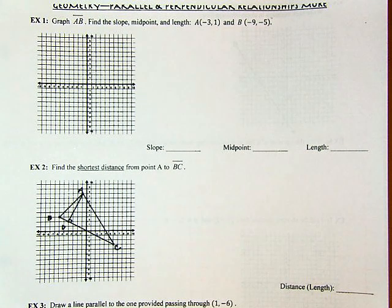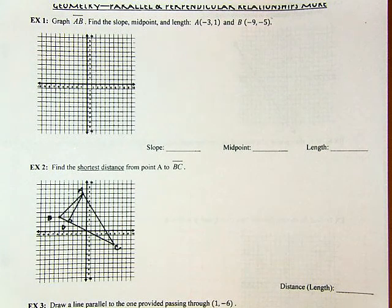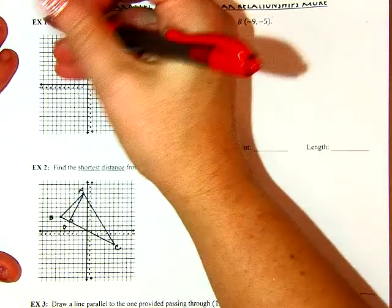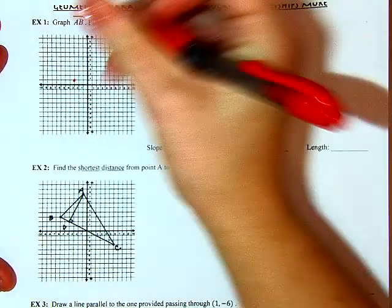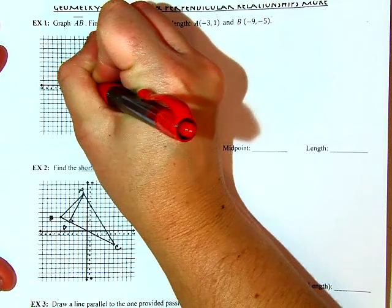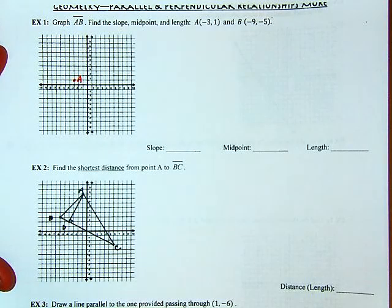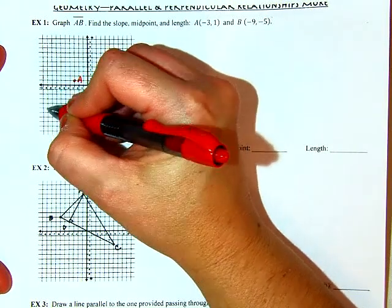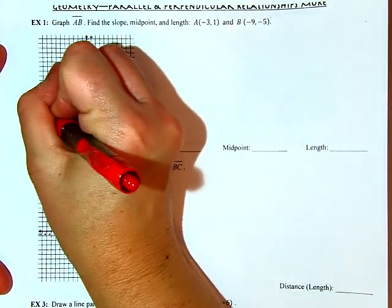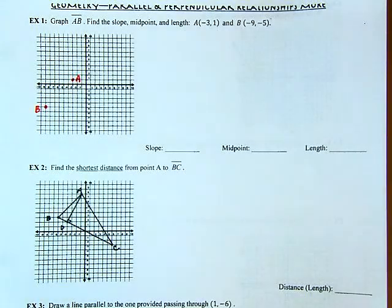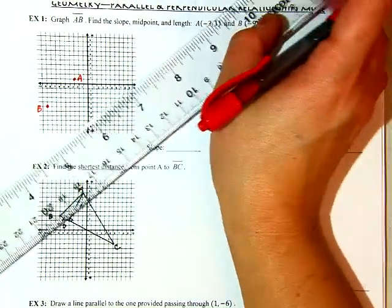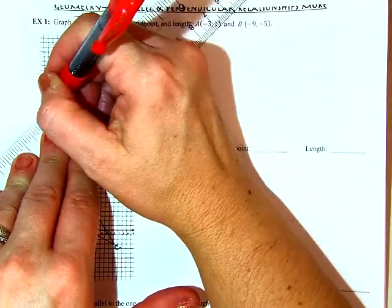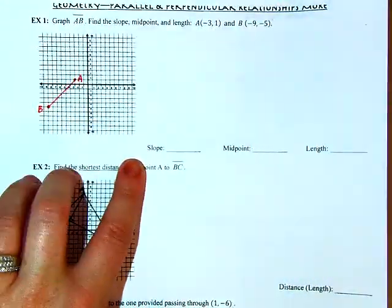Today we are taking on parallel and perpendicular relationships even more. Starting off with a review problem: graph segment AB and find the slope, midpoint, and length. A is at negative 3, 1, and B is at negative 9, negative 5. Using a straight edge to connect them, here is the segment.